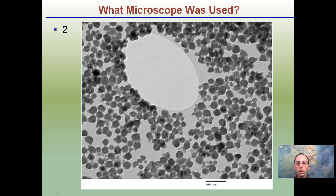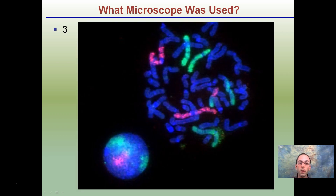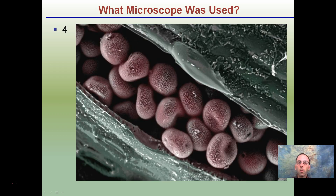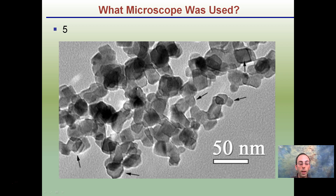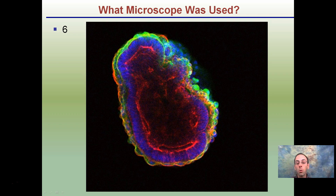How about image two? Looking at the microscopes we learned about, what microscope may have made this image? Number three — what microscope was used here? And the last one, number four. Don't let the colors fool you — as we learned, some images can be colorized and some cannot. Two more added: another prime example — hint, the microscopes may be used more than once. And here's our last one. What microscope made this image?